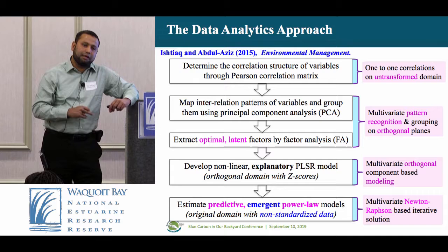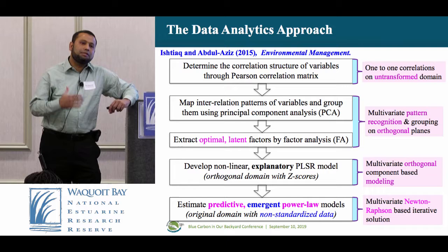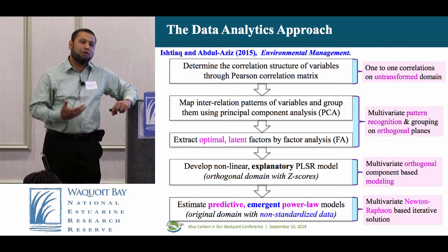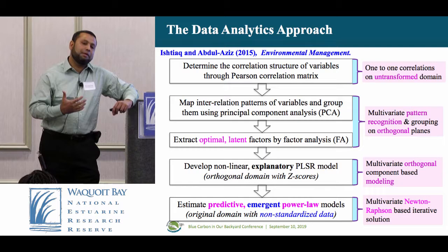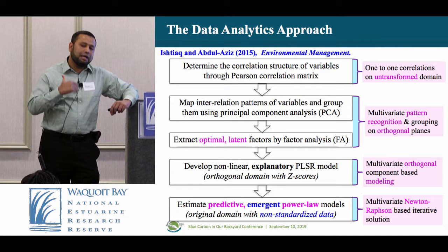Parameters — you need parameters in mechanistic models to fit the data. Even though you describe the mechanism, you still need a lot of them because you have so many processes. After working on that for a year, I realized that even if you are successful at site scale, can you really take it to end users, and how easy is it to develop and use?